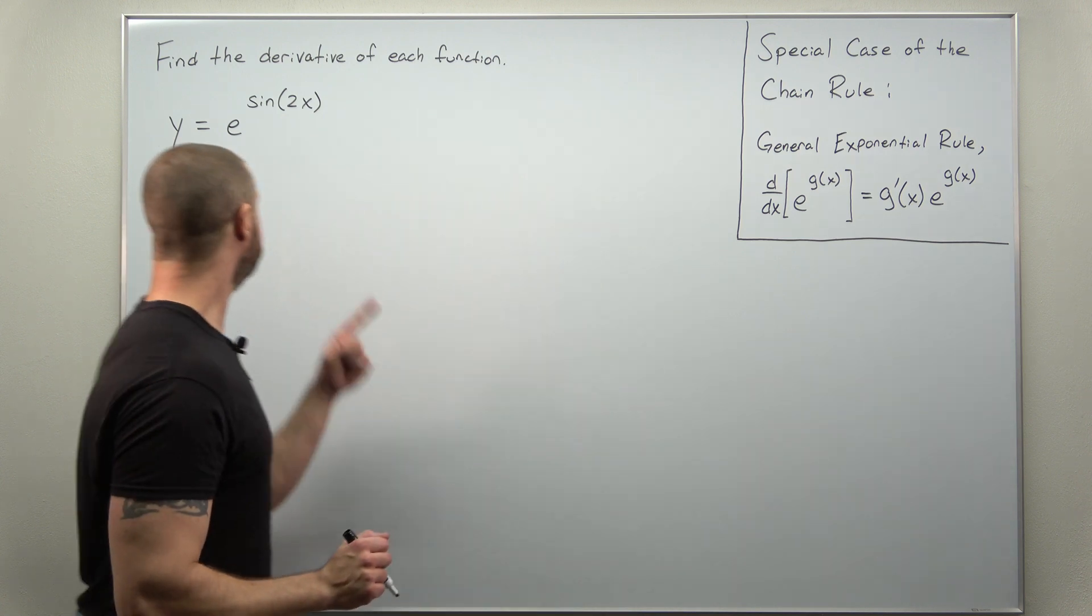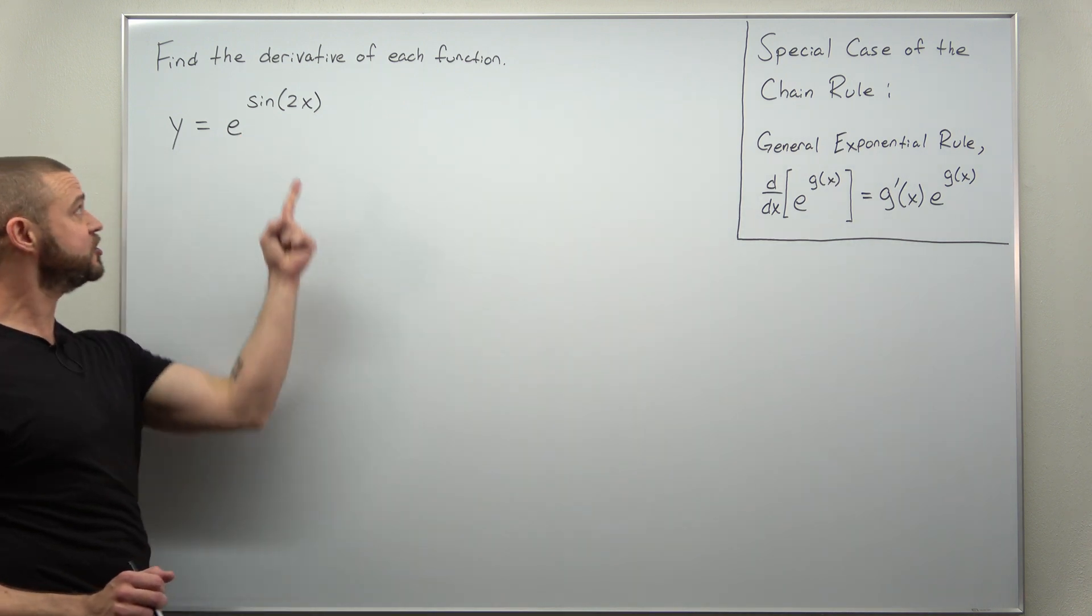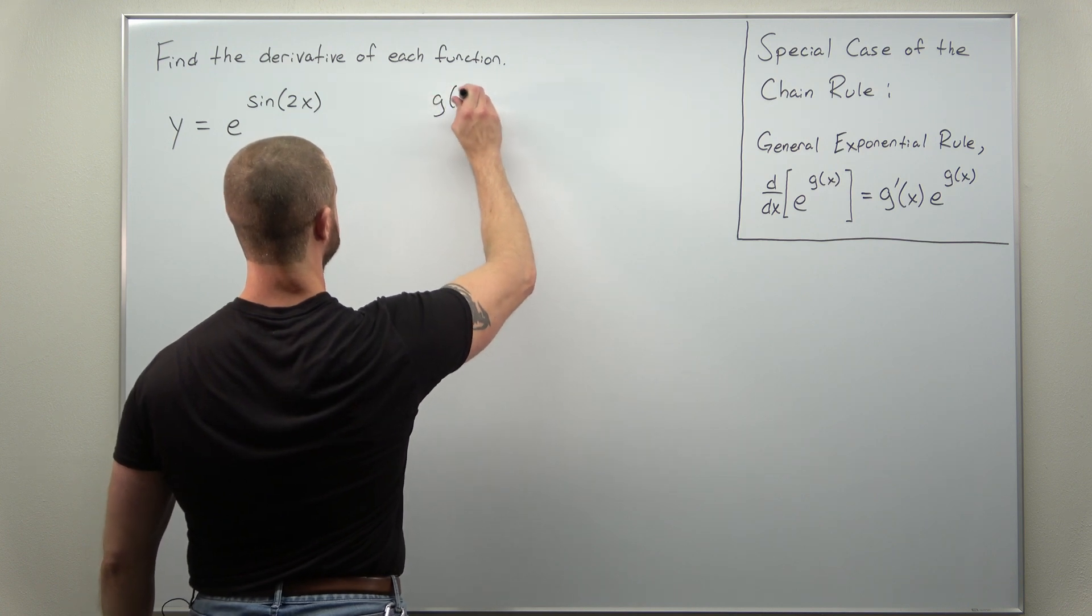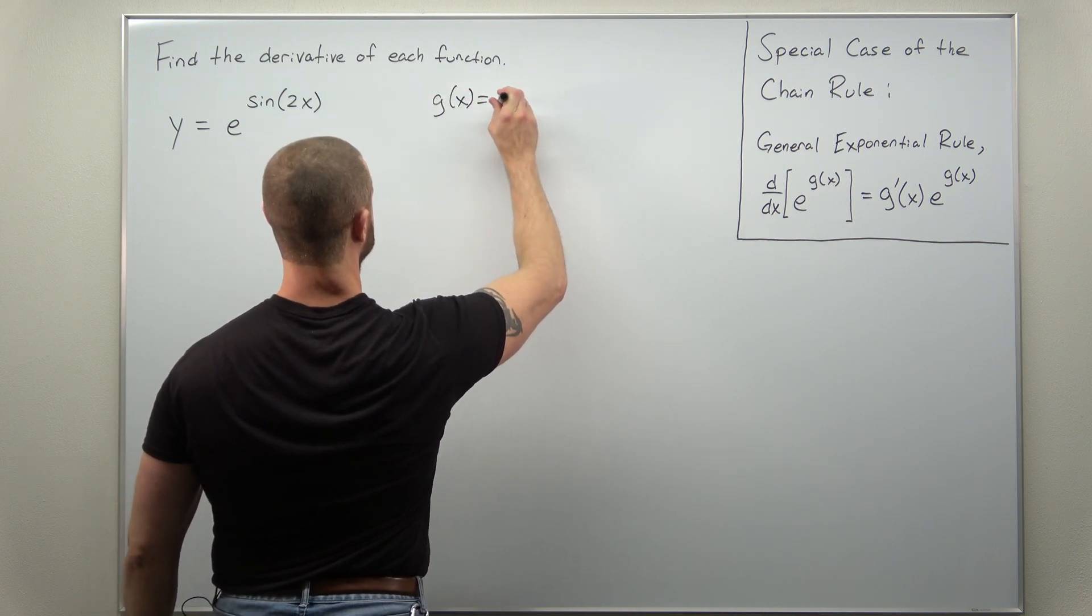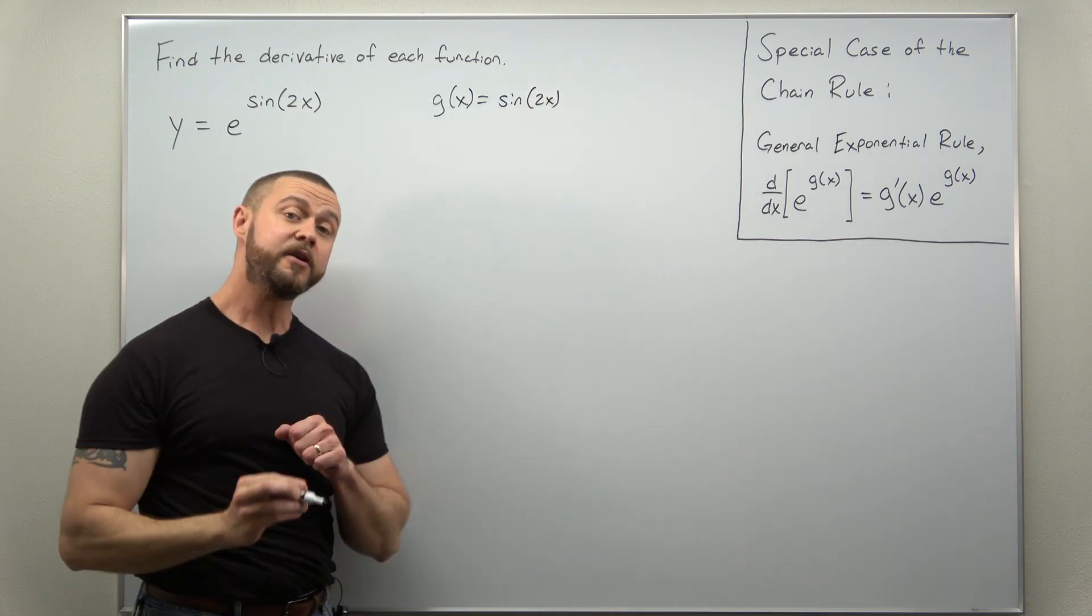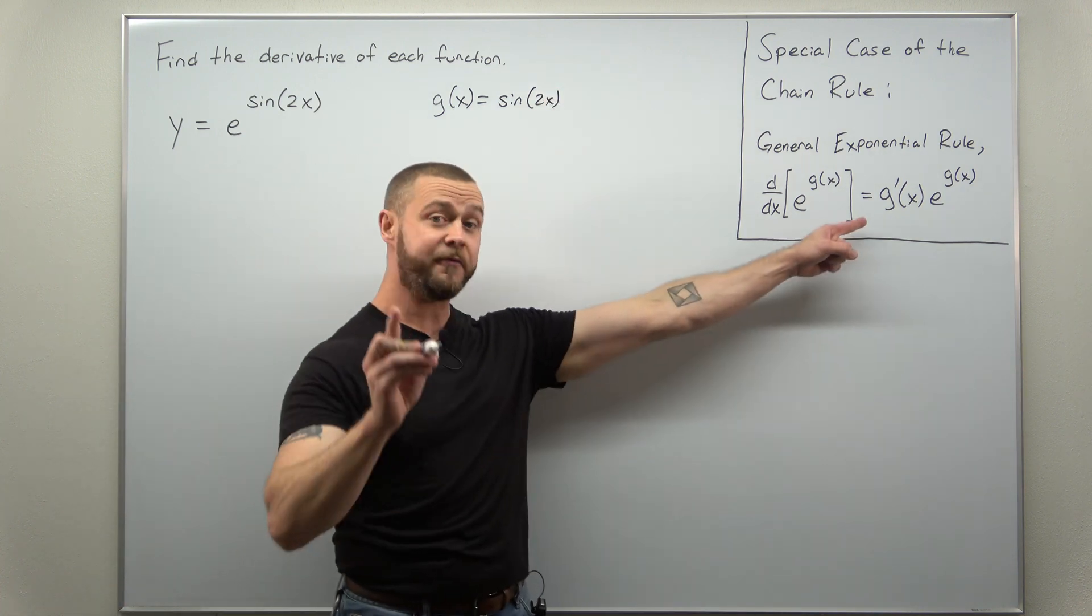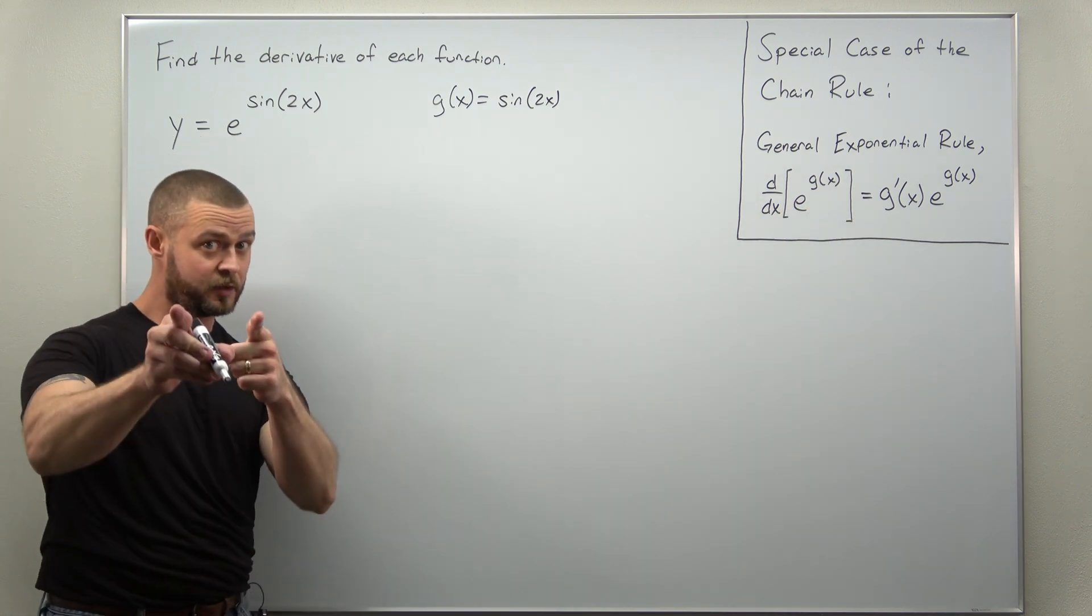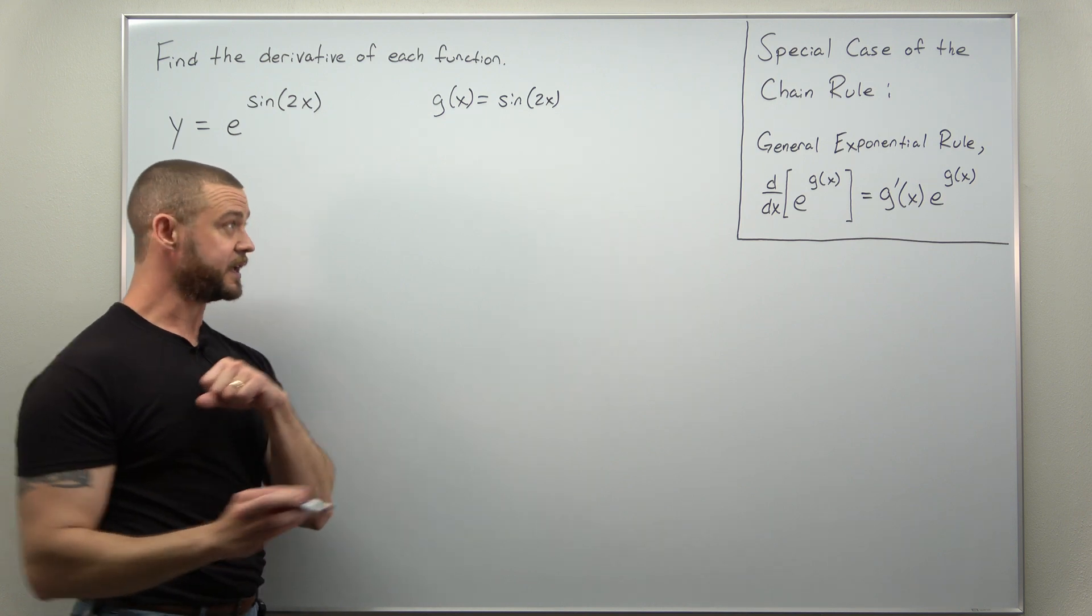So really what we need to do to differentiate e raised to a function is just calculate the derivative of the inner function, which we'll call g of x here. So g of x is sine of 2x, and to calculate the derivative g prime for the general exponential rule, we just need to find this derivative, which we're going to apply the chain rule again.